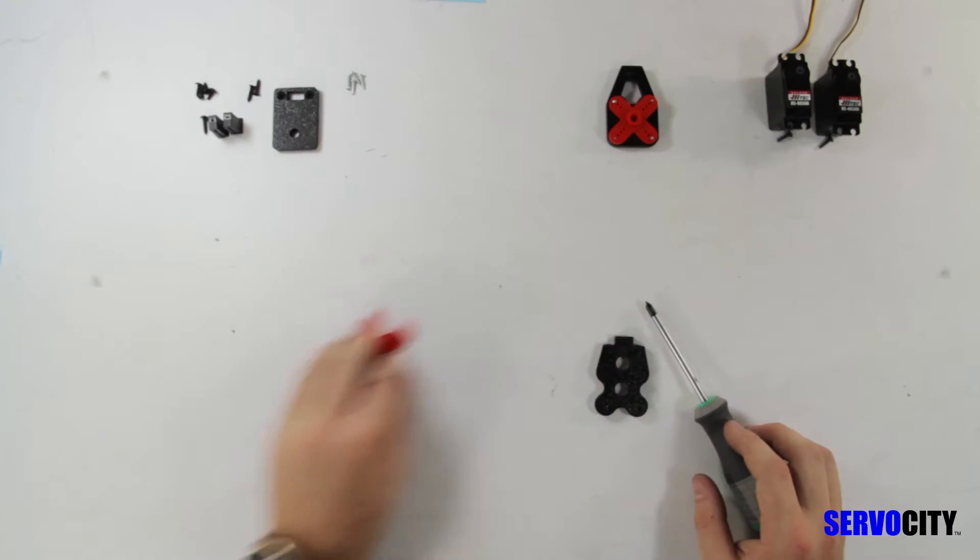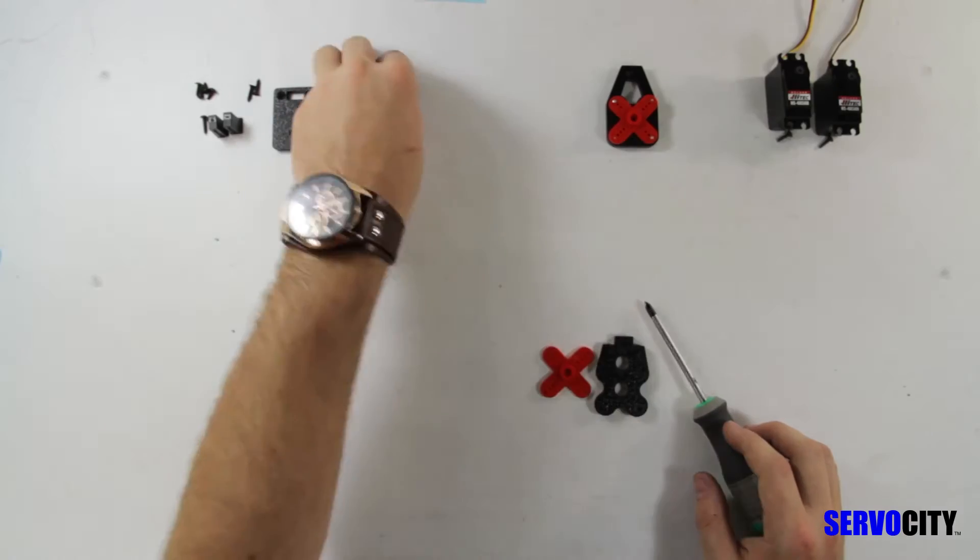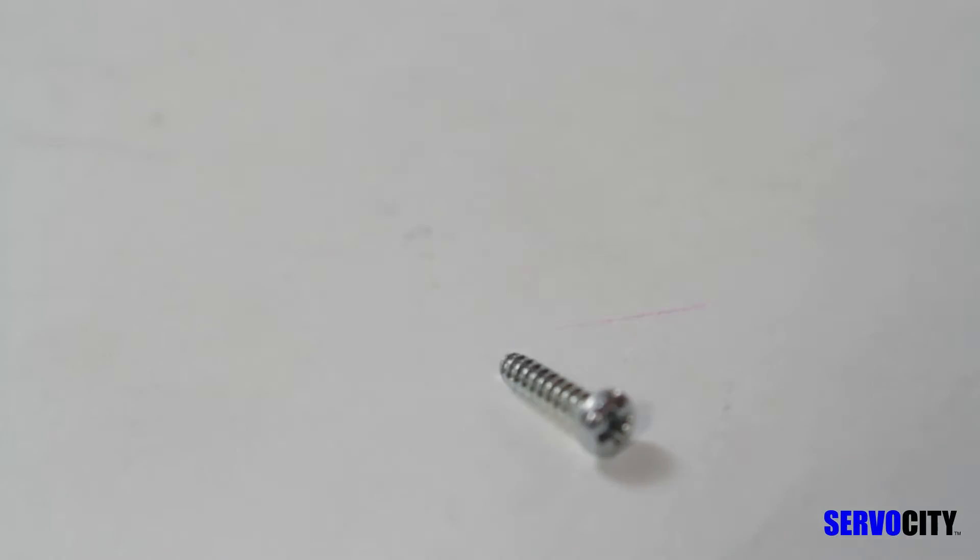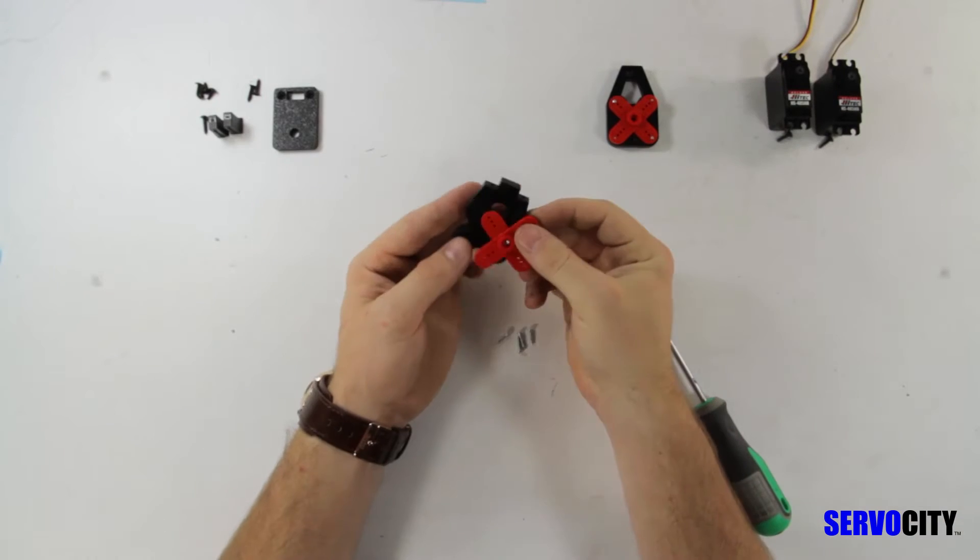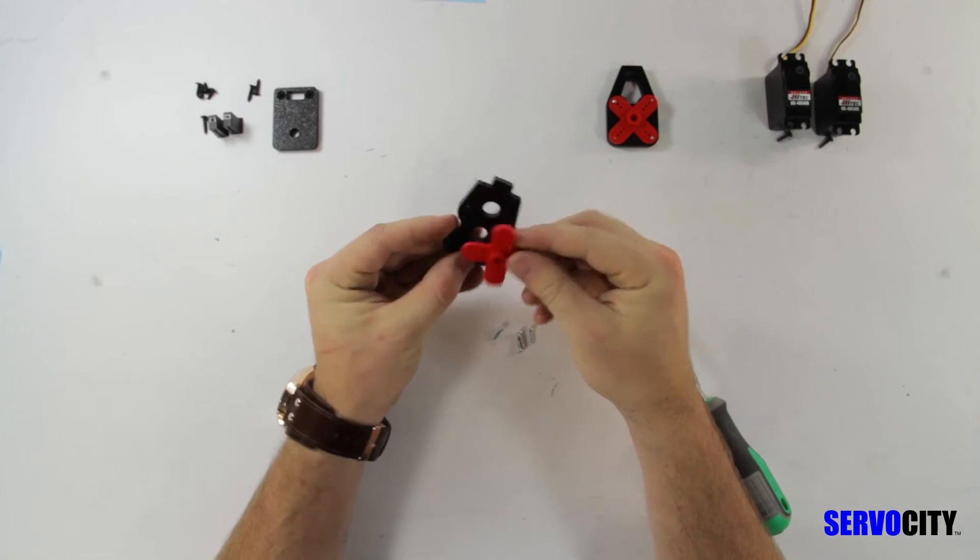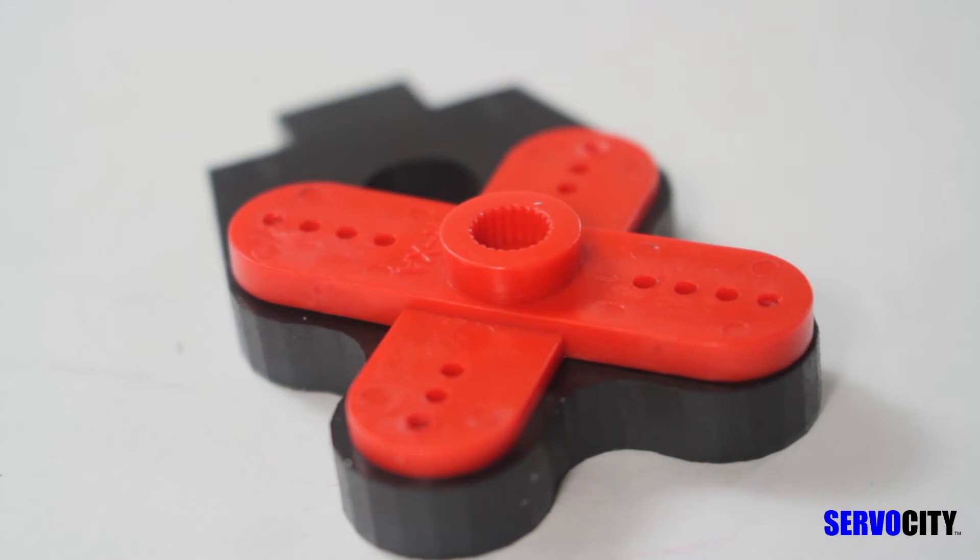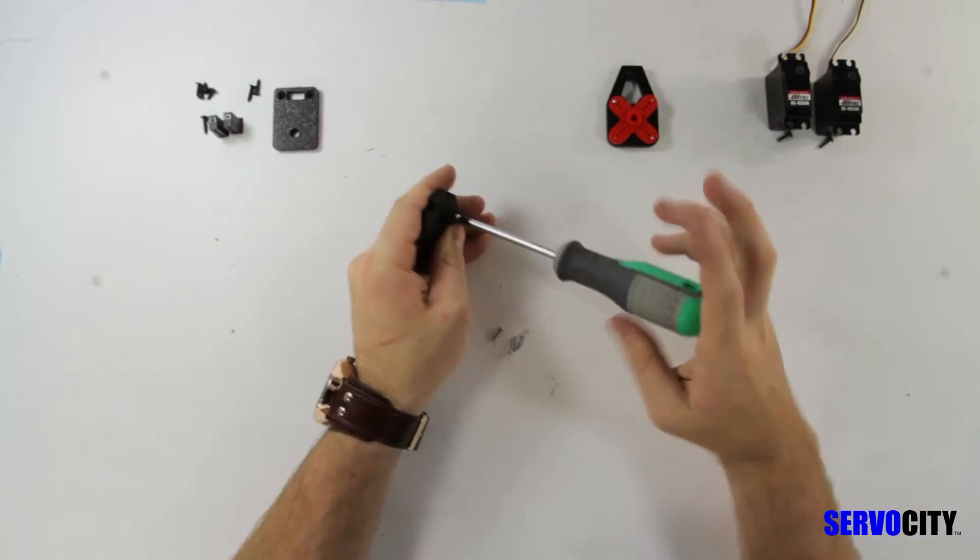Second step you need the other ABS plate, another red servo horn, and four more of the plastic screws. Again this servo horn is not symmetrical, however for this plate you will want to position the four hole arm so that it is on the top left and the bottom right this time.